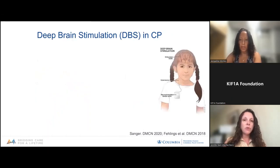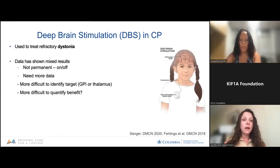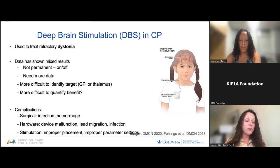Deep brain stimulation, or DBS, sounds scary but is actually a surgery that you can modulate — turn on and turn off. For people with dystonia and other abnormal movements, DBS can be quite helpful. It's used to treat refractory dystonia, not spasticity, and results at this point are mixed. Because it's not permanent and can be adjusted with a neuromodulator, it may be more targeted. Risks include infection, bleeding, and hardware malfunction. This is based on cerebral palsy evidence and not necessarily on CAND.